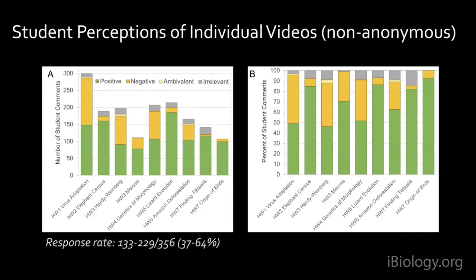Most of the remaining graphs look at responses week by week to individual videos. On the left is the number of student comments per video, broken out by positive, negative, ambivalent, and irrelevant. The response rate varied across the quarter — largest for the first week and tapering as students got into the workload. When it got really low in week three, I reminded students their comments were valuable and it bumped up a little in week four. Panel B shows the same data as percent of comments, making it easier to compare which videos students preferred.